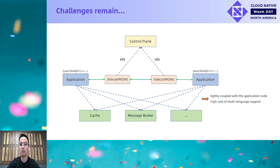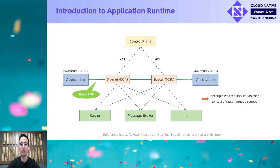Another problem is the cost of multi-language support. Since we need to develop the logic of protocols, codecs, load balancing, and disaster recovery for each language SDK, the cost is very high. In early 2020, Bilgin Ibryam published an article called Multi-Runtime Microservices Architecture. The main idea is to abstract the various distributed capabilities into a multi-runtime, so that the application no longer needs to rely on specific SDKs, but will interact with the runtime over de facto standards such as HTTP, which then solves the challenges just mentioned.